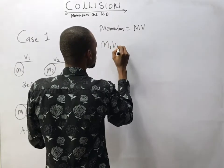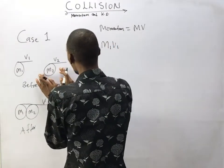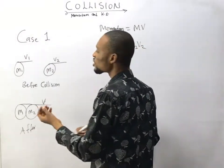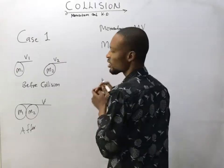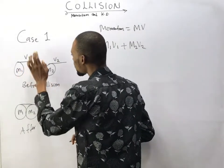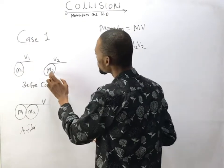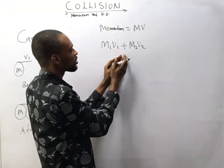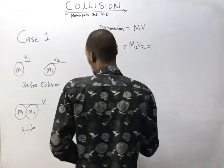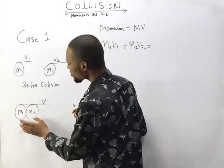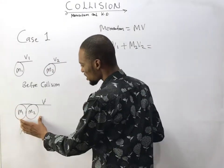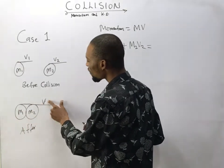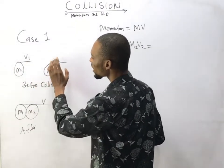Momentum is simply mass times velocity. Before collision, the momentum of the first body is m1 times v1, and the momentum of the second body is m2 times v2. So their total momentum before collision is m1v1 plus m2v2. After collision, both bodies retain their masses — m1 remains the same and m2 remains the same — however they now have a common velocity.